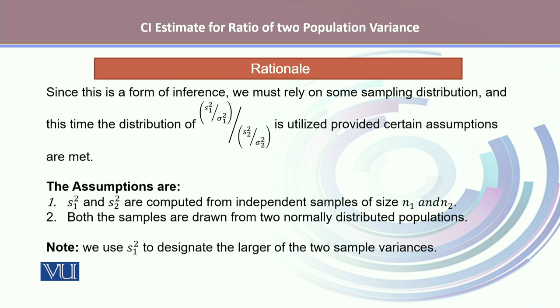The first assumption that we look for is that S1 square and S2 square are computed from independent samples of sizes N1 and N2. The second assumption says that both samples are drawn from two normally distributed populations.